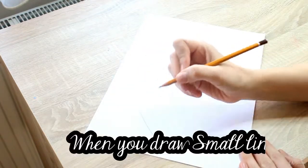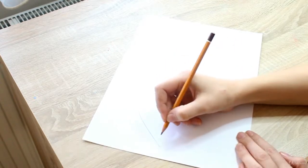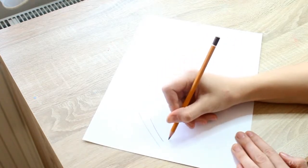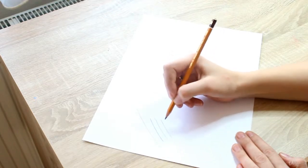And when you are drawing small lines, put your wrist on the desk. Fix your hands there. You see, we are drawing from our wrist moving, so our lines are more consistent.